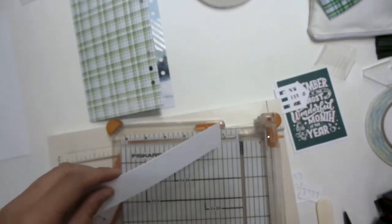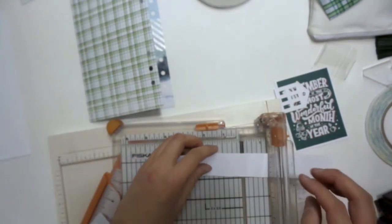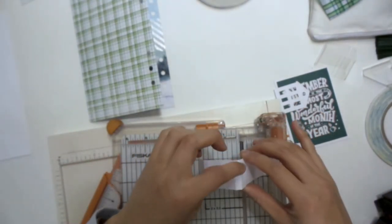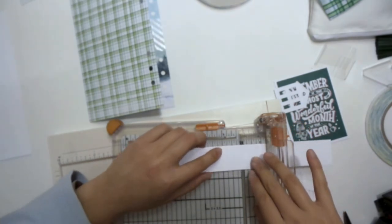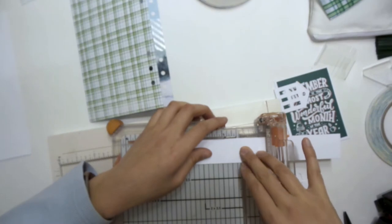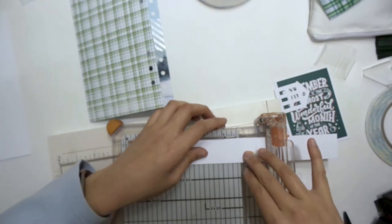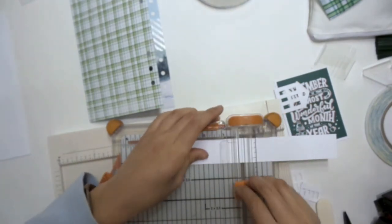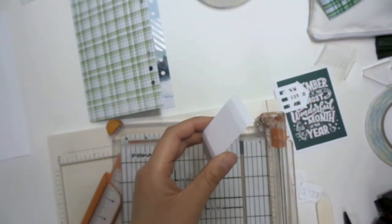So I'll get out my paper trimmer again. We're going to line up this score mark at the quarter inch and cut it off like so.